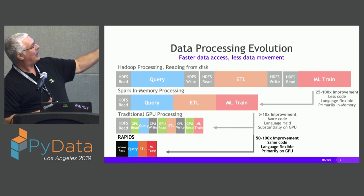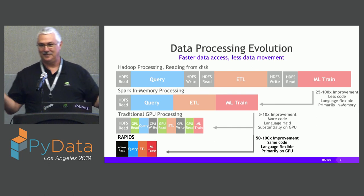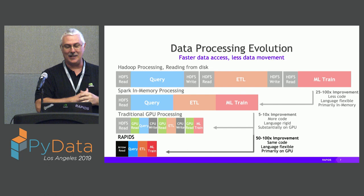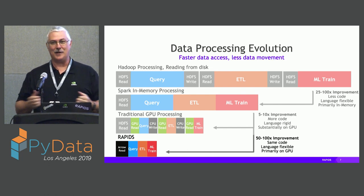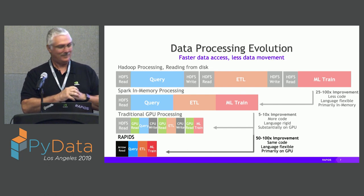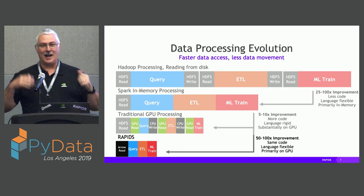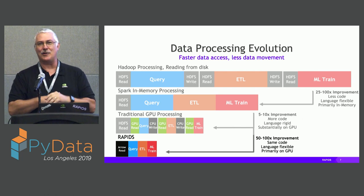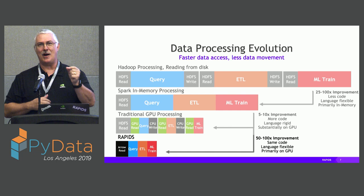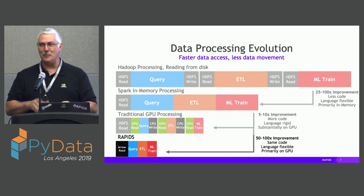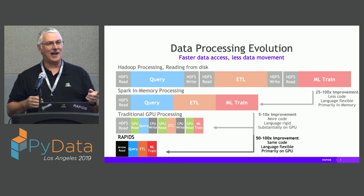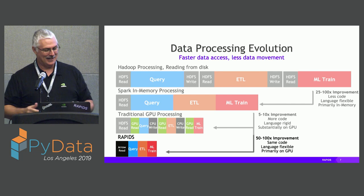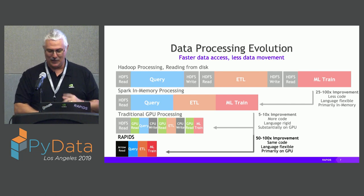Luckily along came Apache Arrow to define a nice columnar store. We said if all our stuff uses a columnar store, I can run my ETL and just give the machine learning folks a pointer to that data — they know the format, I don't have to copy it, convert it, or move it off and back onto the GPU. Following that approach, we've gotten down to about 100x faster than Spark, which was 100x faster than Hadoop. With Spark, I would code a model, hit run, and after ten minutes of waiting I'd start thinking of a different approach — by the time it finished I couldn't remember what I was doing.